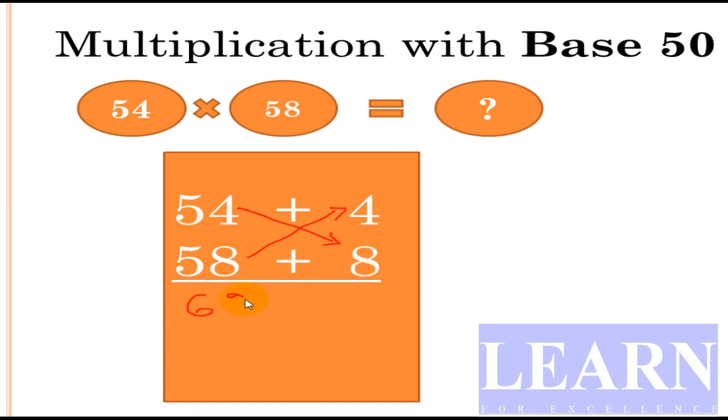54 plus 8 gives 62, and what about 4 times 8? 4 times 8 is 32. Now look here, since it is of base 50, we have to do one extra thing. Let's take half of the number.